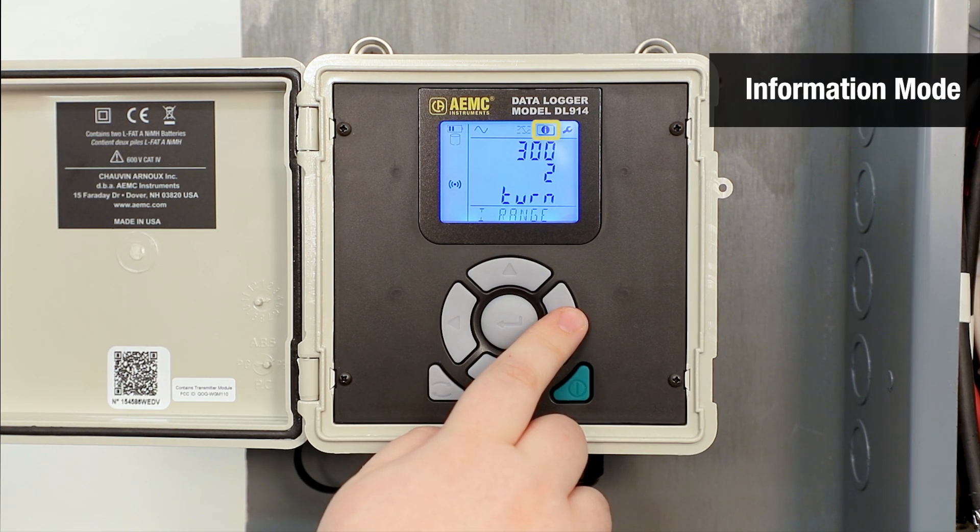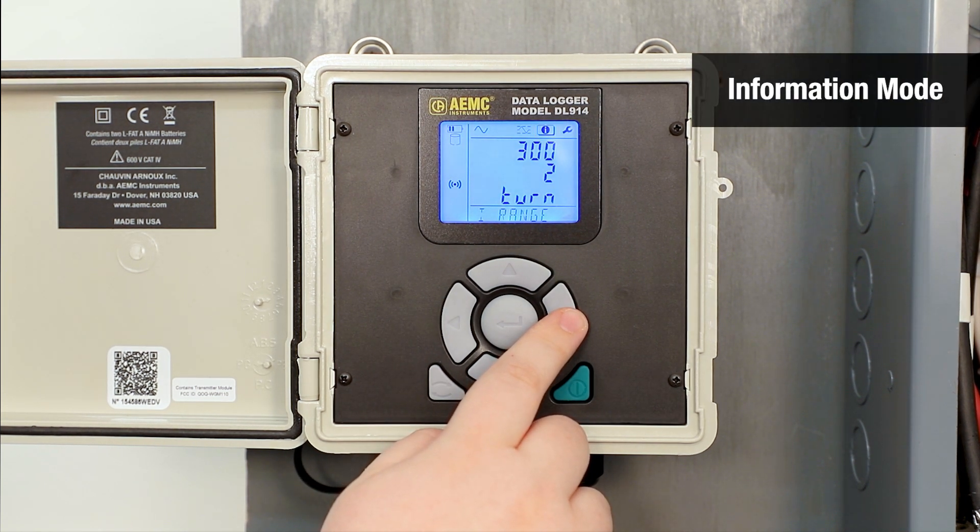In information mode, the user can view the status of the current measurement range and number of turns the sensor is wrapped around the conductor.